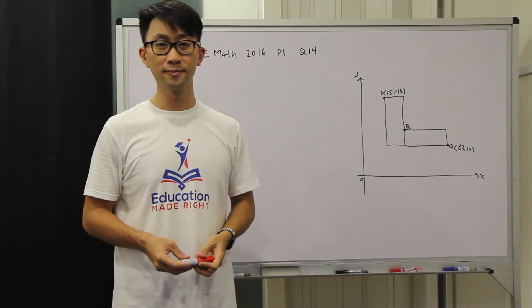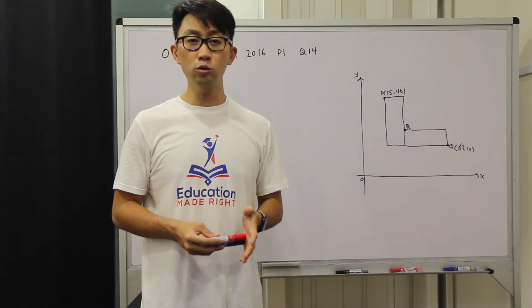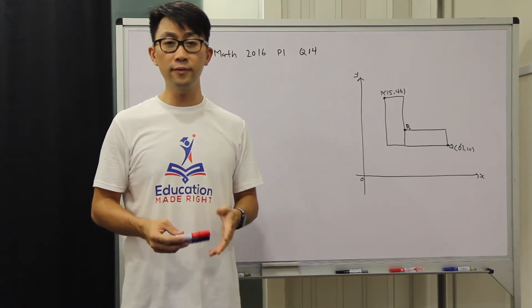Let us first have a look at the question. The diagram shows two congruent rectangles. The sides are horizontal and vertical.